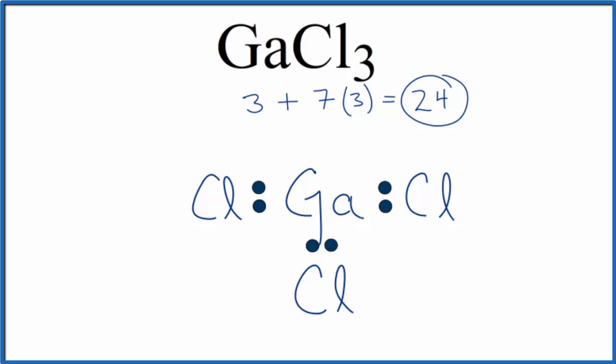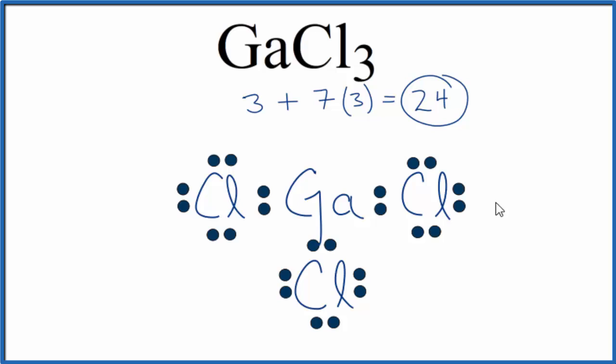Let's complete the octets on the chlorine atoms on the outside. So at this point, all of the chlorines have eight valence electrons. They have an octet.